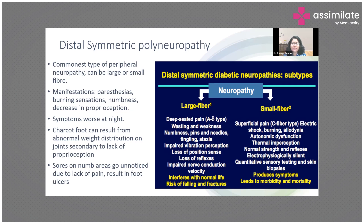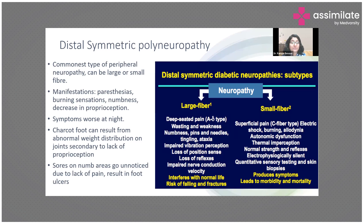Large fiber neuropathy mainly affects the lower limbs with deeper pain, muscle wasting, muscle weakness, imbalance, ataxia, loss of reflexes including the ankle reflex, and loss of position sense. Small fiber neuropathy causes more superficial symptoms like burning, tingling, electric shock sensations, and autonomic dysfunction including dry skin, loss of sweating, erectile dysfunction, and gastroparesis. Importantly, small fiber neuropathy does not cause significant muscle wasting, distinguishing it from large fiber neuropathy.